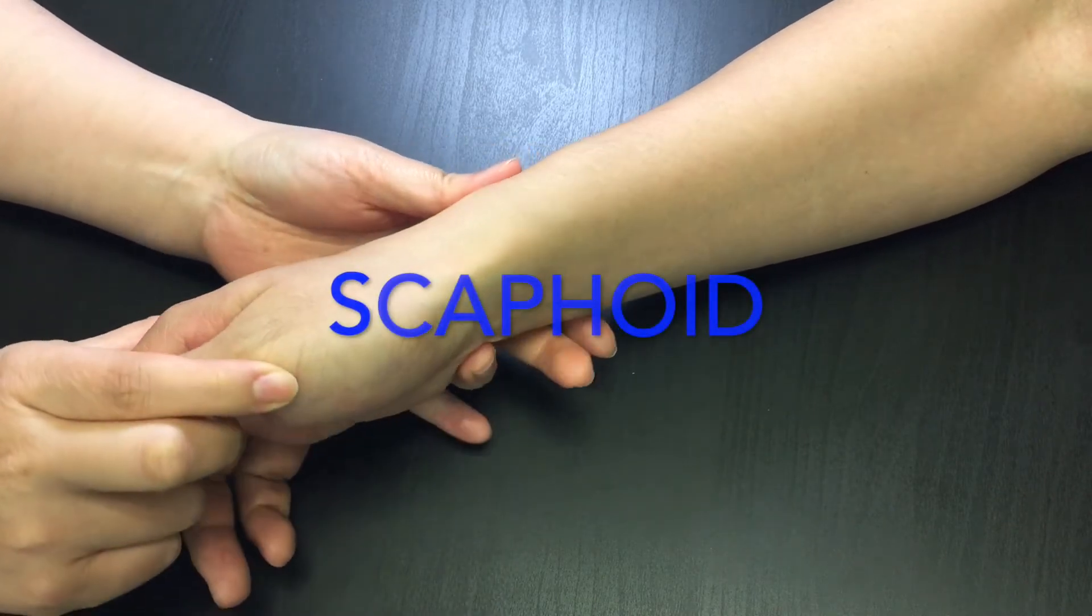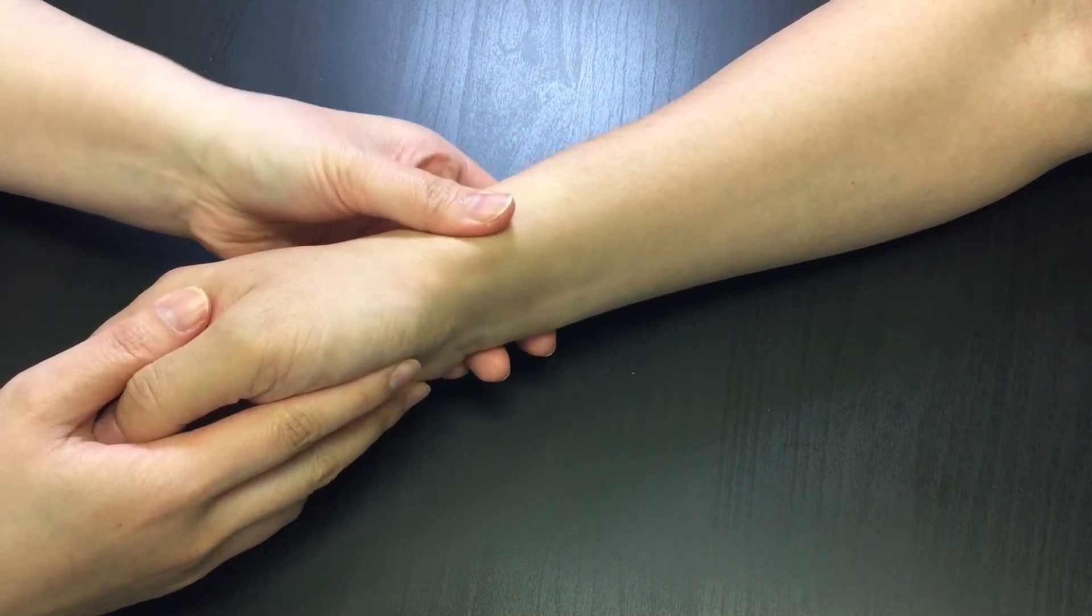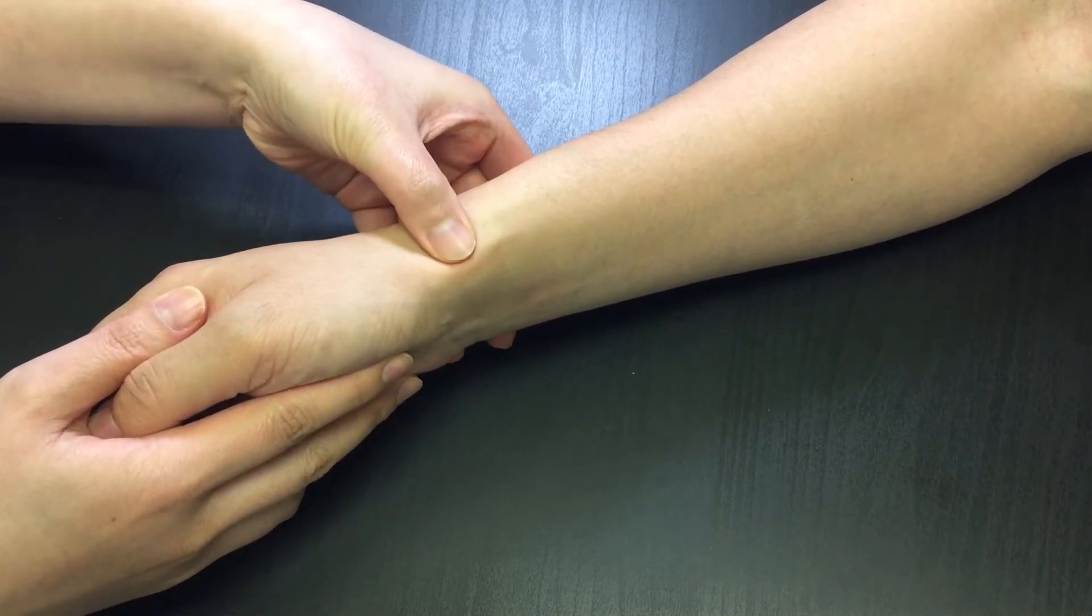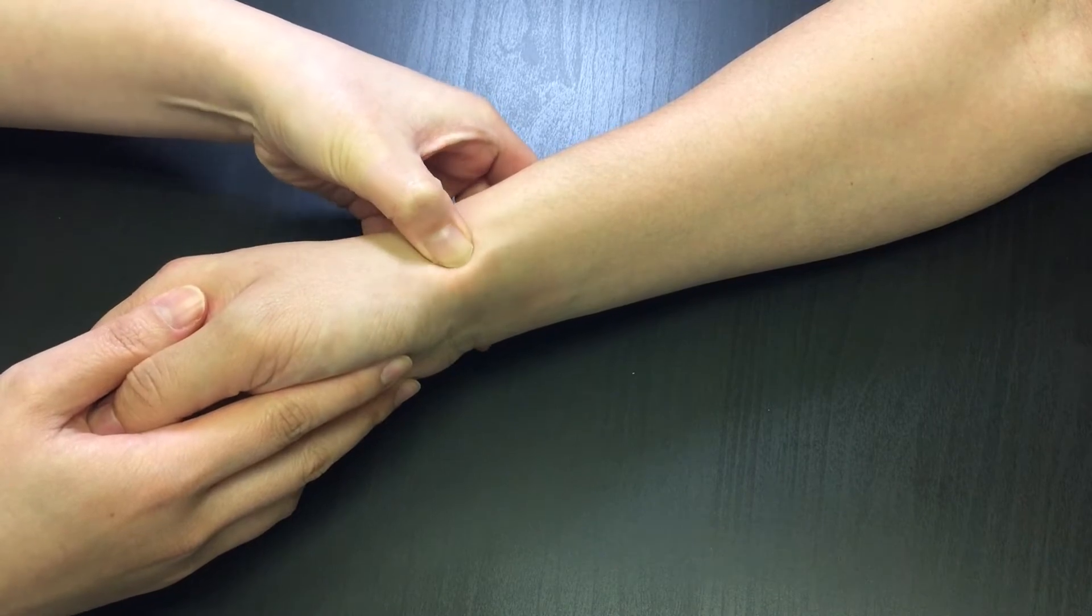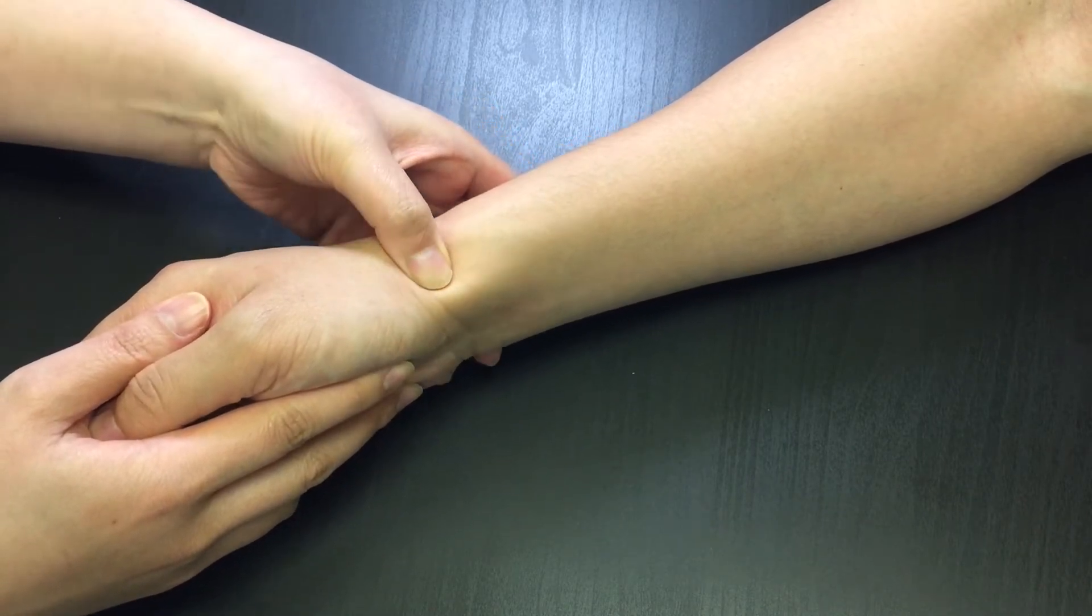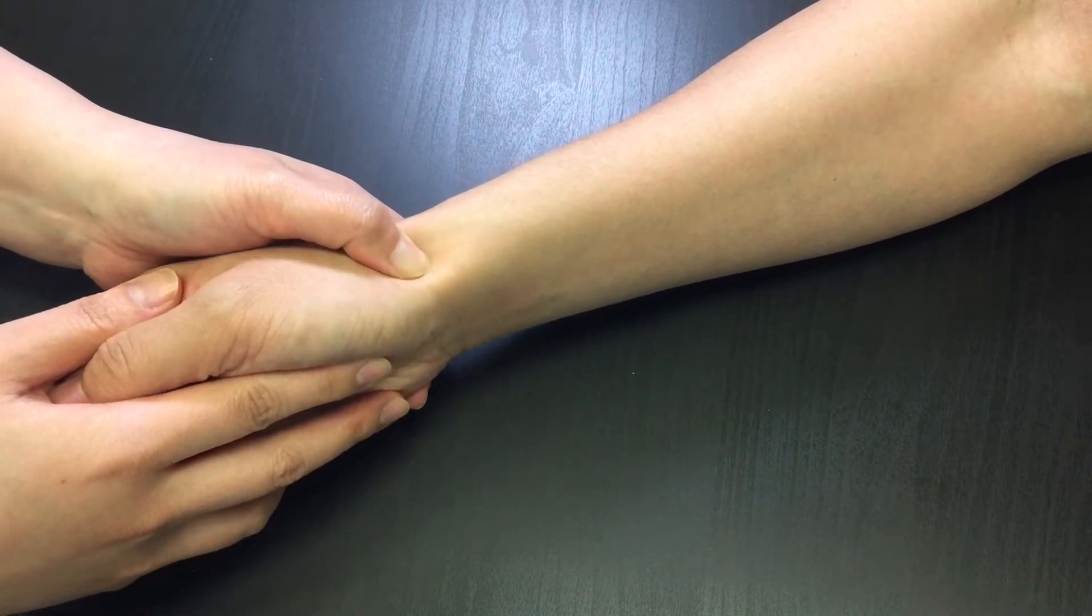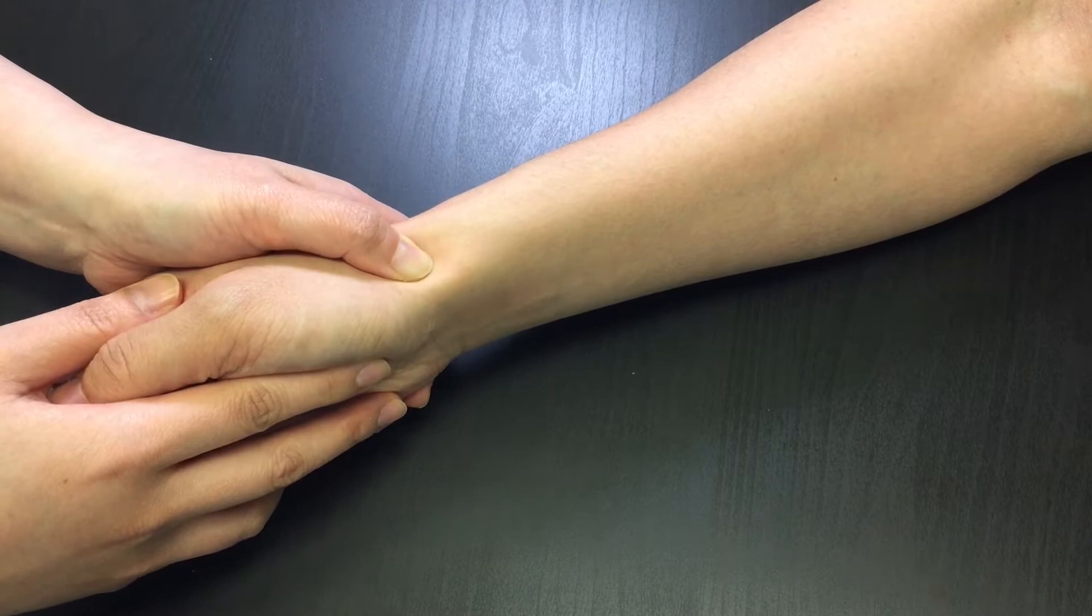Now let's palpate the scaphoid and its tubercle. The scaphoid is the most lateral one in the proximal row of carpals. Move your fingers distally along the shaft of radius. After passing styloid process on radius, just distal from it, there is the scaphoid. It is located in the anatomical snuff box.